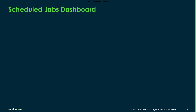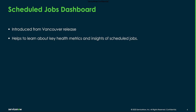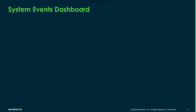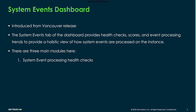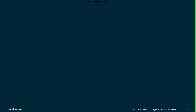Let's go over them one by one. The first is the Scheduled Job Dashboard, introduced in the Vancouver release — it helps you learn about key health metrics and insights of the scheduled jobs. The other is the System Event Dashboard, also introduced in the Vancouver release. The System Event tab provides health checks, scores, and event processing trends to give a holistic view of how system events are processed on the instance. There are three main modules: system event processing health checks, current scores, and trends.